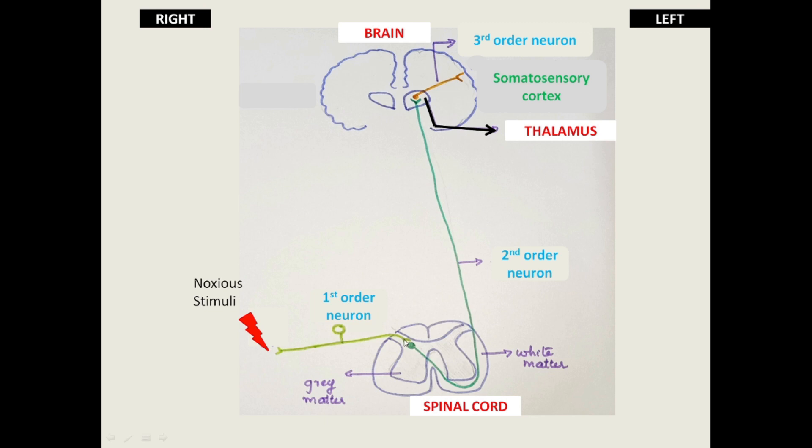The second-order neuron is located in the dorsal horn in the rexed lamina of the spinal cord. This neuron then decusates in the anterior commissure and ascends cranially in the spinothalamic tract to the ventroposterolateral nucleus of the thalamus.